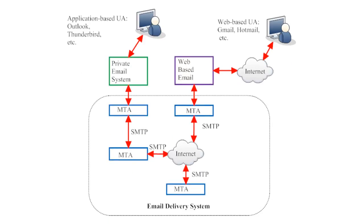To begin, let's examine an illustration that summarizes the basic parts of an email system. For now, let's pretend that an email message is moving from left to right. The sender is the user on the left, and the recipient is the user on the right. To help us talk about these users, let's give them names. I'll call the user on the left Jack, and the one on the right Jill.